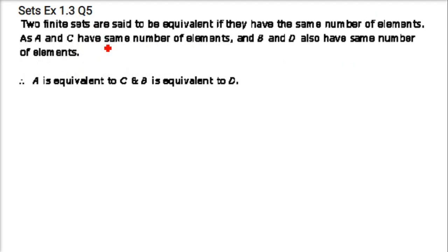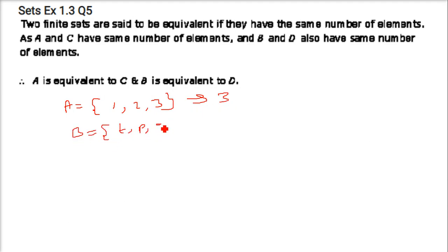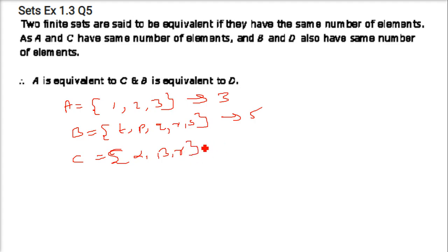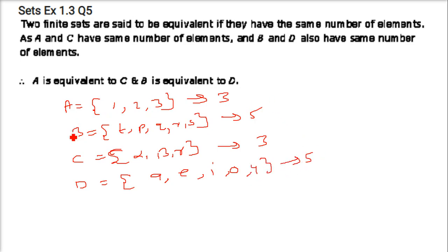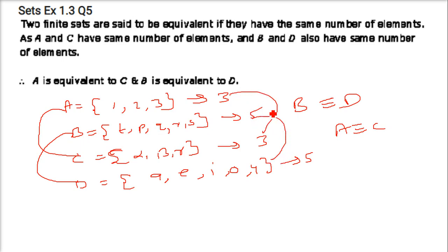Next: pair the equivalent sets. Equivalent sets have the same number of elements. A = {1, 2, 3} has 3 elements. B = {t, p, q, r, s} has 5 elements. C = {α, β, γ} has 3 elements. D = {a, e, i, o, u} has 5 elements. So B and D are equivalent, and A and C are equivalent, because they have the same number of elements.